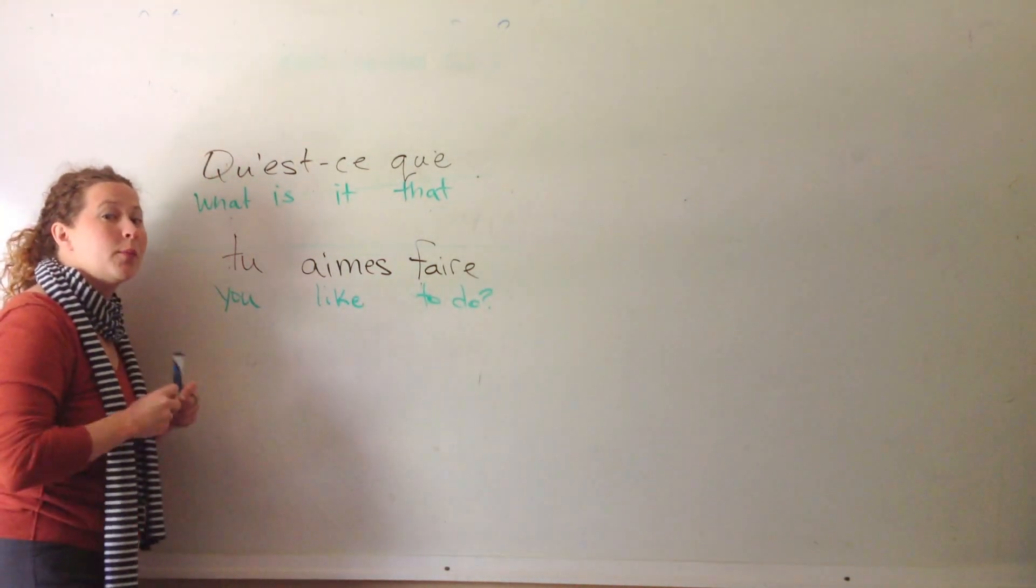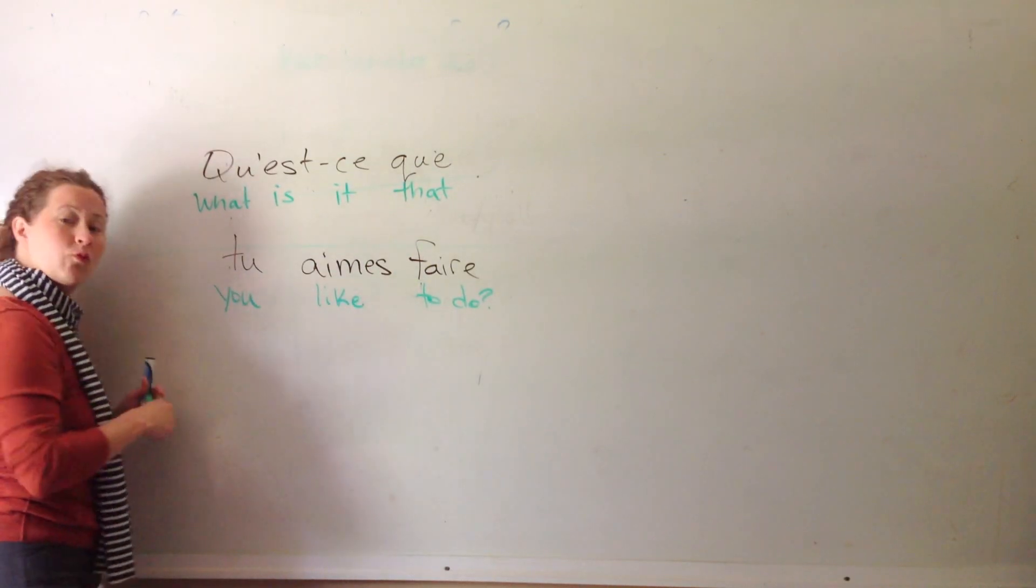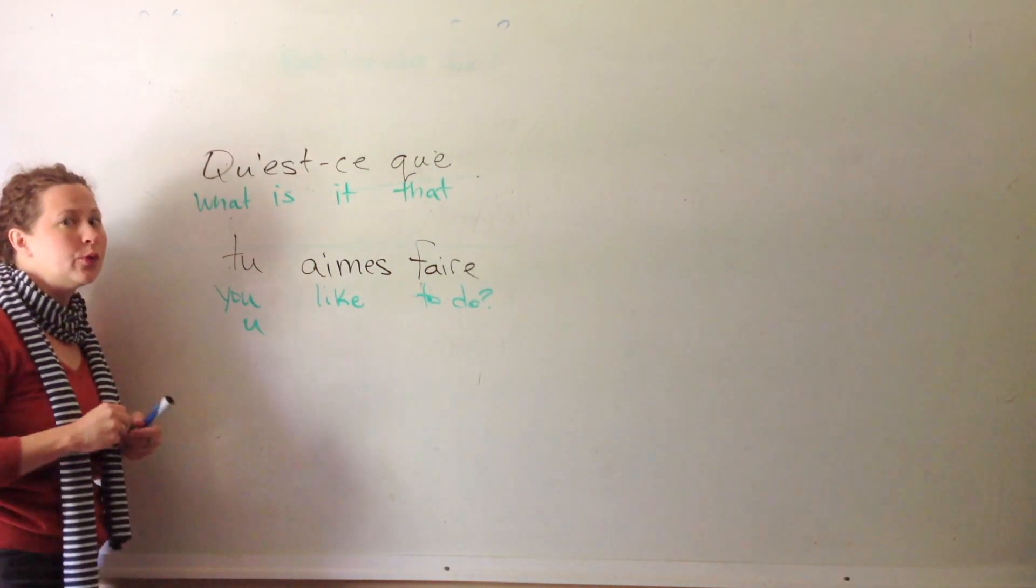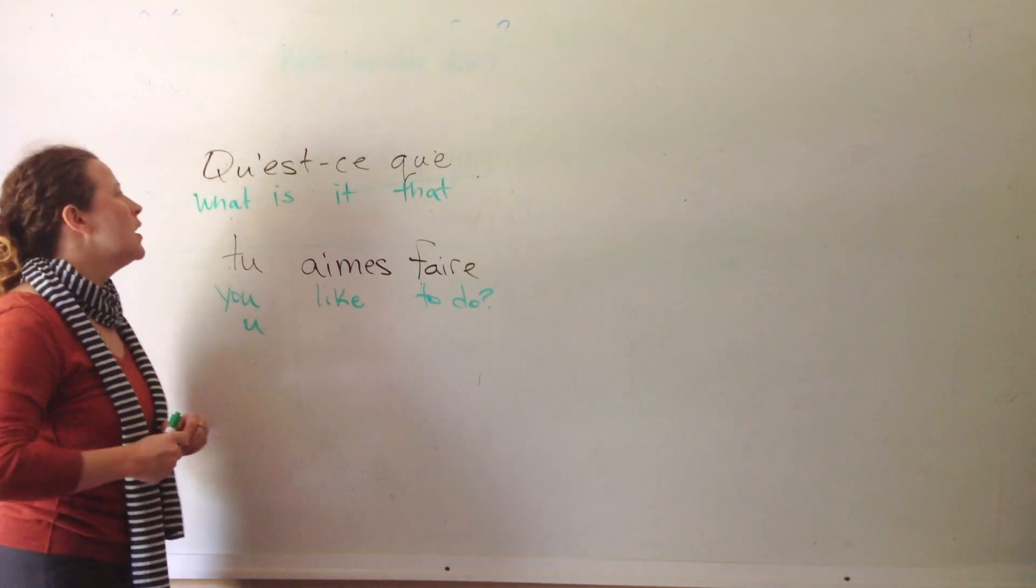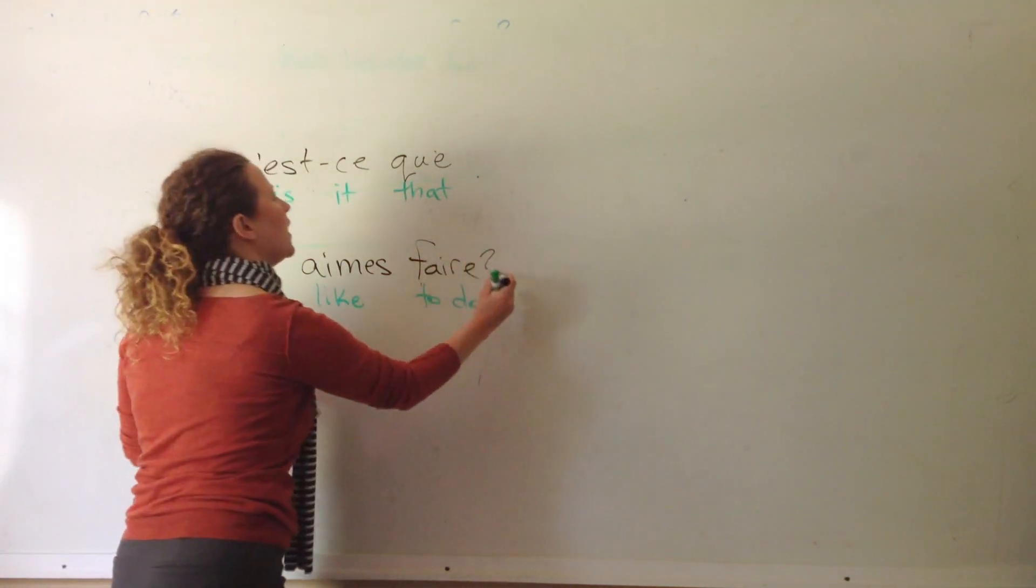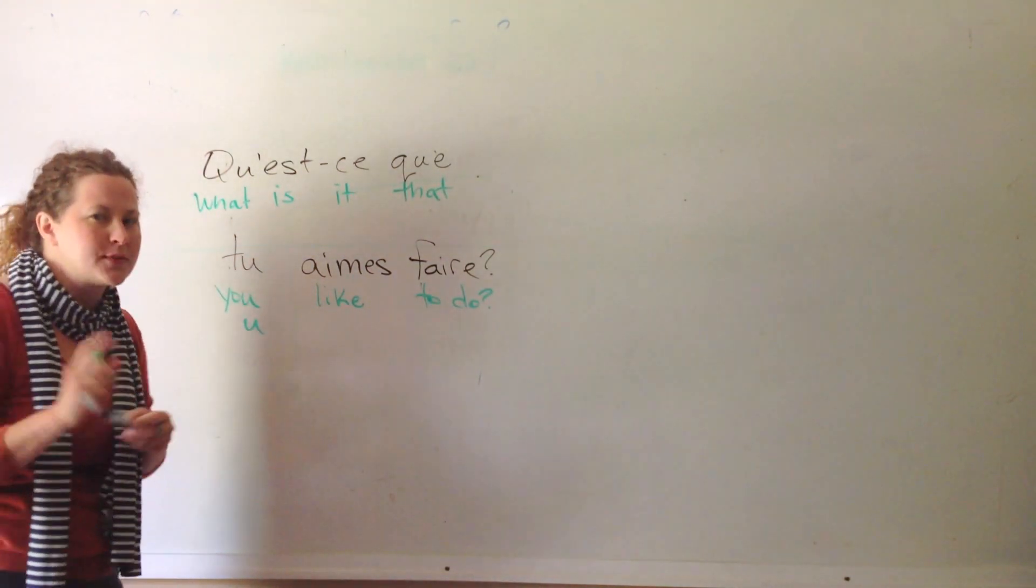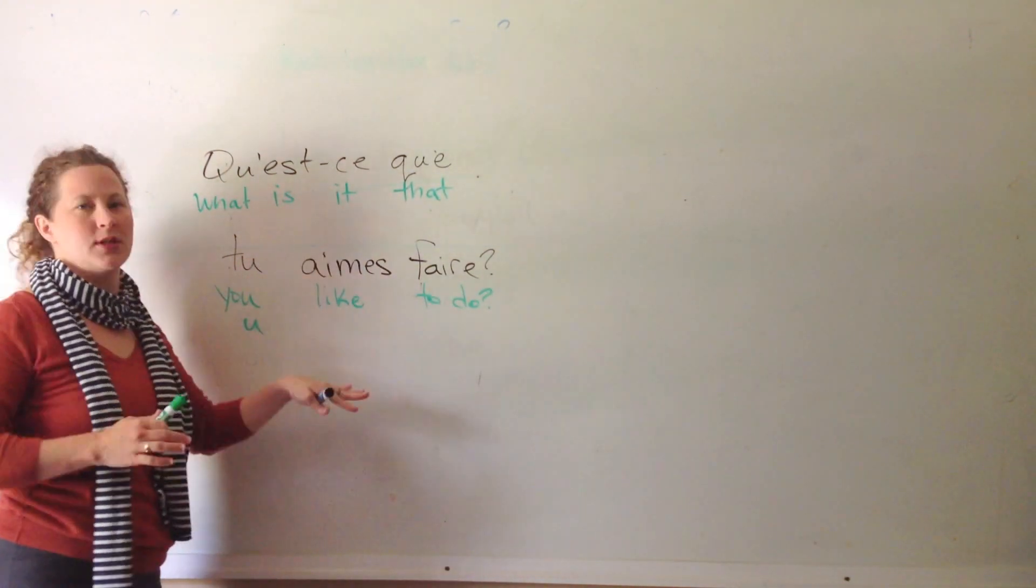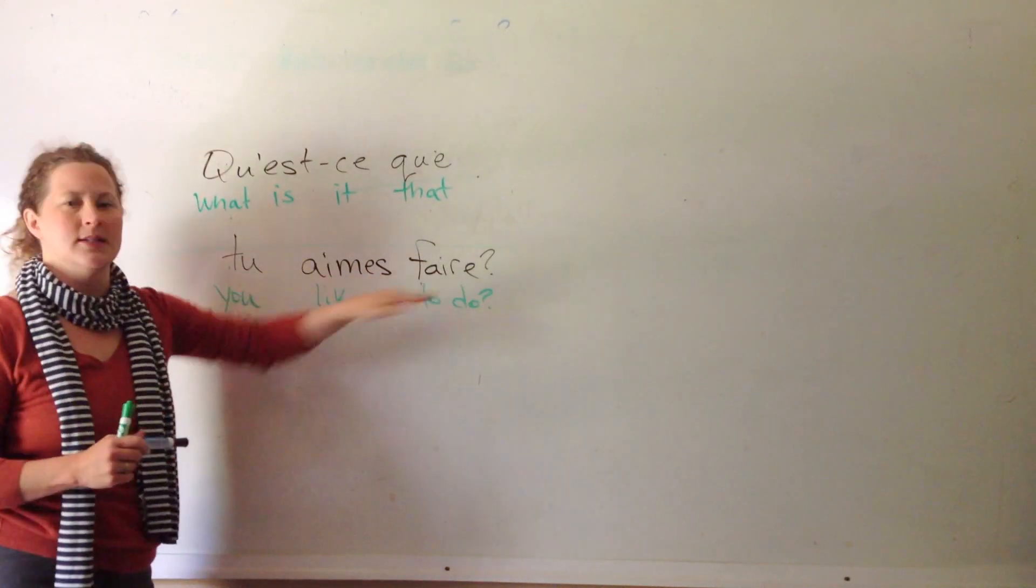Now, you may remember that tu is the informal way and singular way of saying you when you are addressing someone. So, this is how you ask somebody in French what they like to do. Now, we have two different types of verbs going on in this particular phrase. Well, three actually, but we're going to work on these.